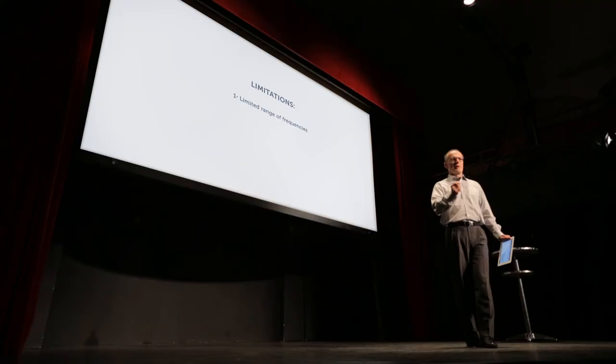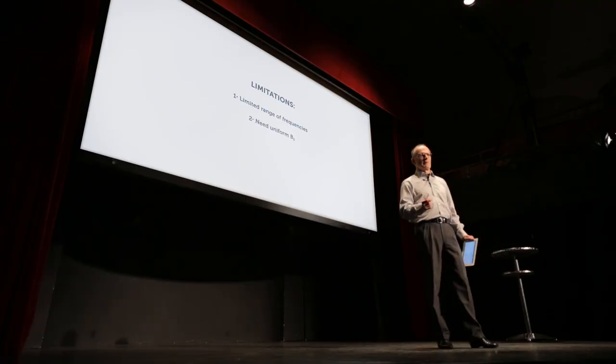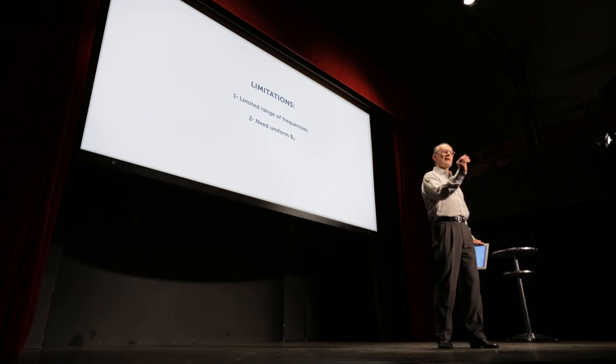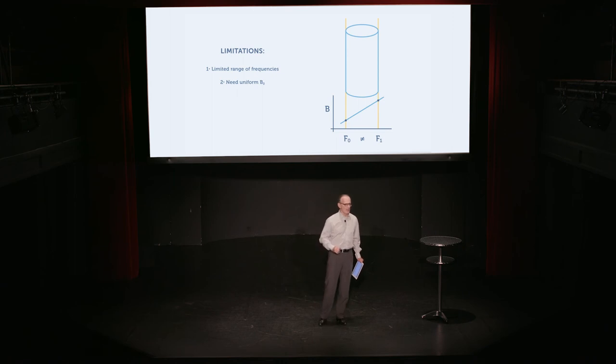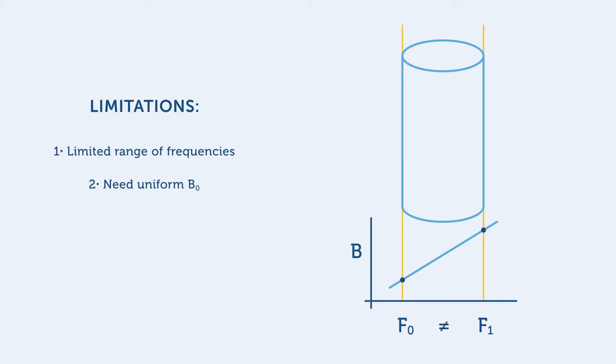Secondly, NMR is limited to using very uniform fields. This is because the sample has a finite diameter, and on one side of the sample, the resonance is at a different frequency than on the other side of the sample in a non-uniform field. So when combined, the different out-of-phase frequencies cancel each other and kill the NMR signal.